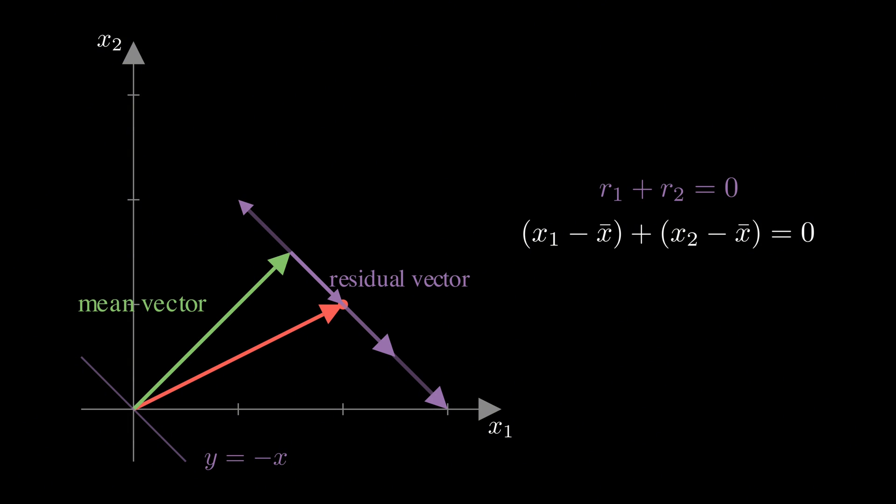This means the residual vector can only live on the line where the components add to 0, where the second component is the negative of the first. That's another one dimensional constraint, so the residual vector also has just one degree of freedom.